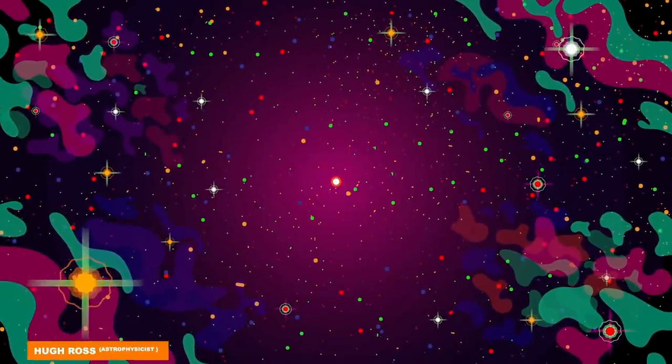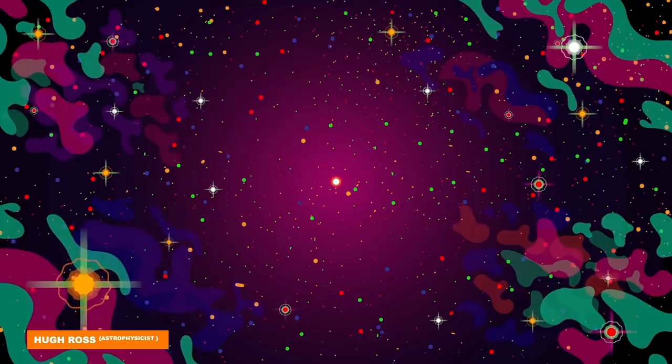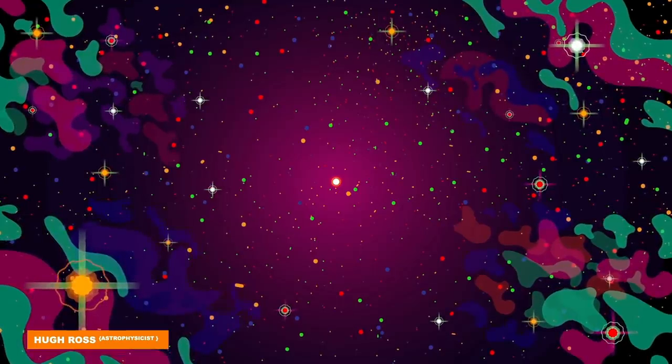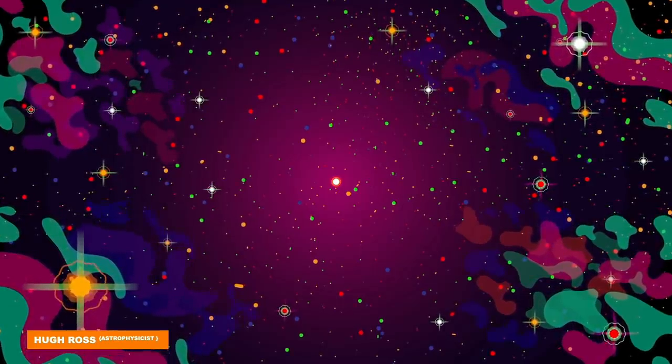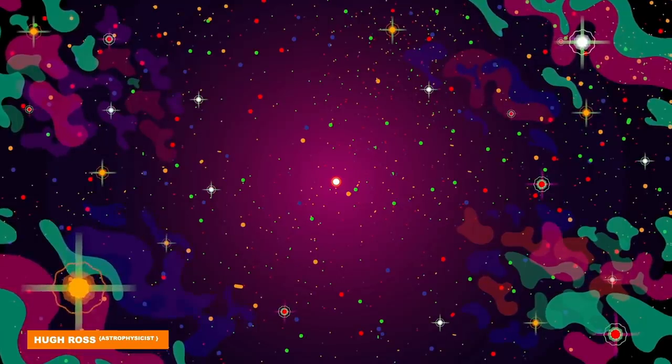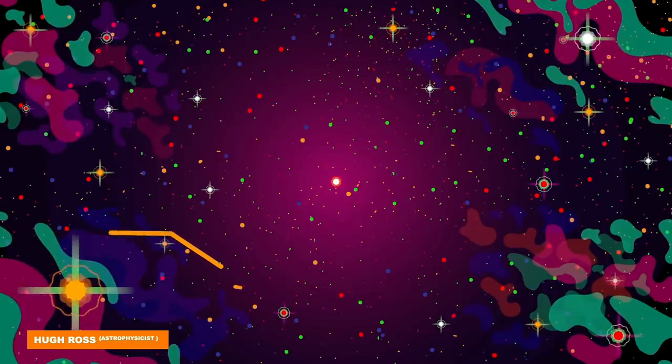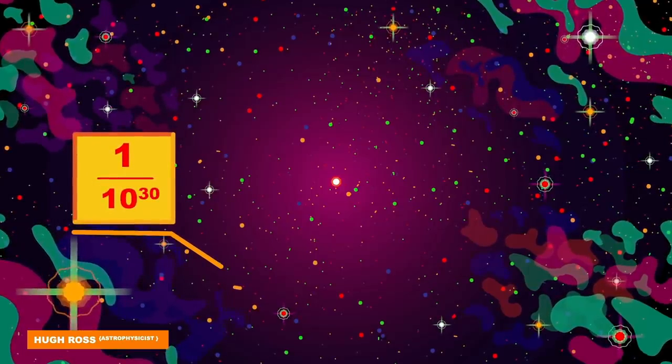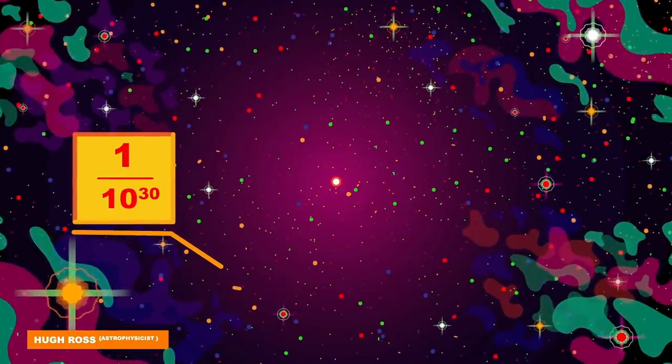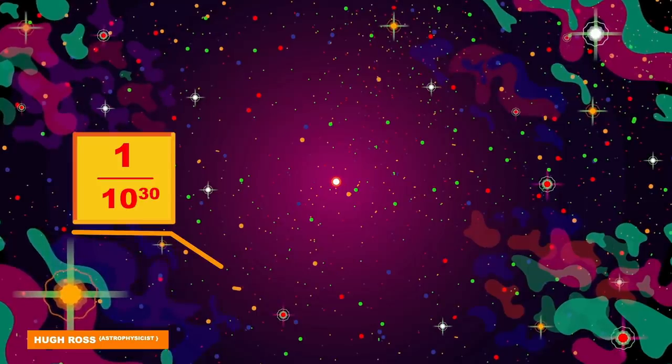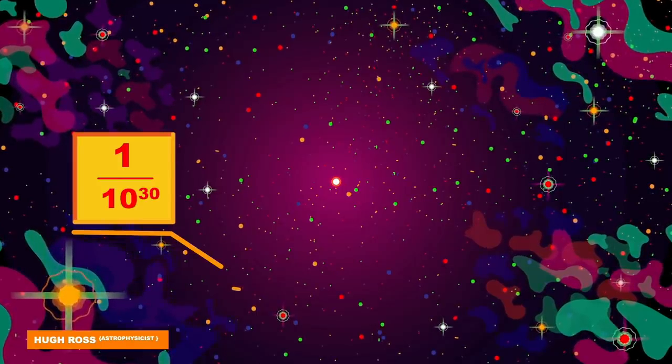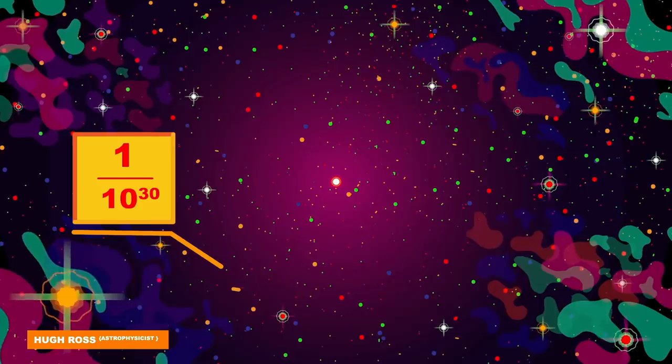So I guess it makes sense when astrophysicist Hugh Ross said that the chance of our planet existing in the universe is so rare that he calculated it to be 1 over 10 to the power 30. That's the chance that a planet like ours could form in the universe.